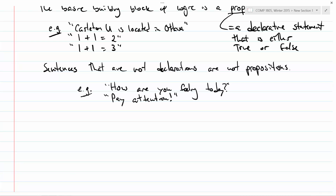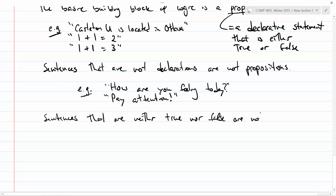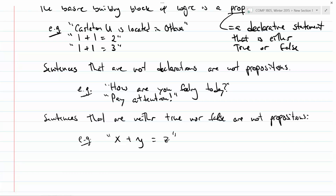There are also sentences that are neither true nor false. For example, 'x plus y equals z' — is that true or false? It depends. If x is 0, y is 1, and z is 1, that's true. But if x is 1, y is 1, and z is 1, that's 'two equals one,' which is false. This sentence is neither true nor false because you don't have enough information, so it is not a proposition.